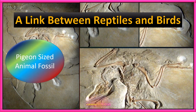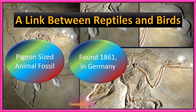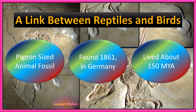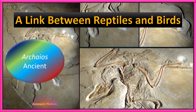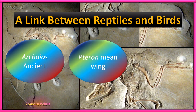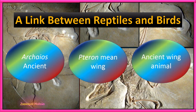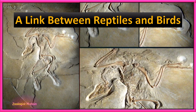Archaeopteryx is a pigeon-sized animal fossil found in 1861 in Germany, lived about 150 million years ago. The word 'Archaeo' means ancient and 'pteron' means wing, so Archaeopteryx means 'ancient winged animal.'